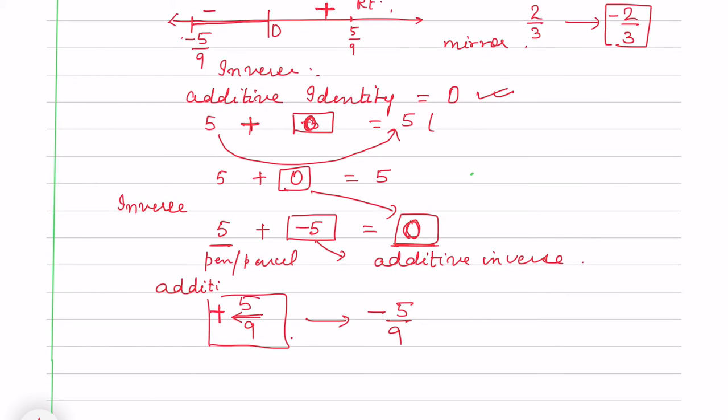Suppose it is -11/-13. We know that there are positive rational numbers and negative rational numbers. Which type of rational number is it? It is a positive rational number. What will be its inverse? A negative rational number.